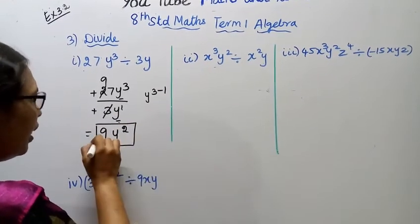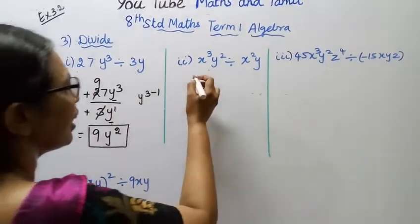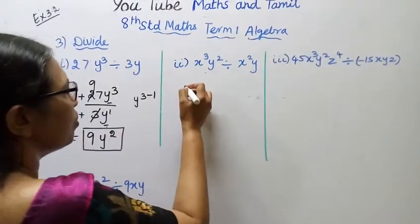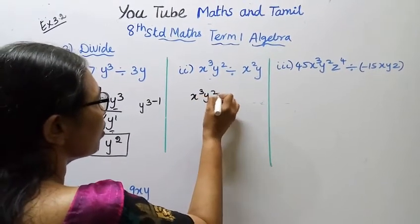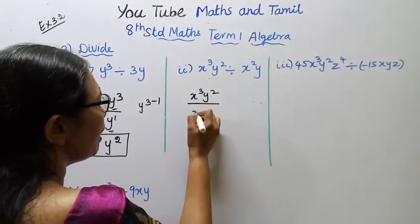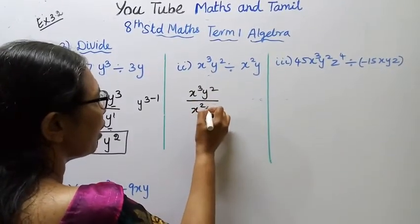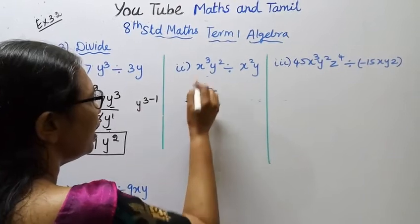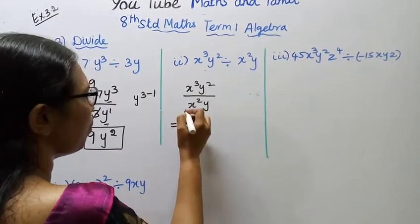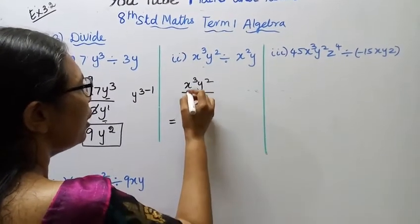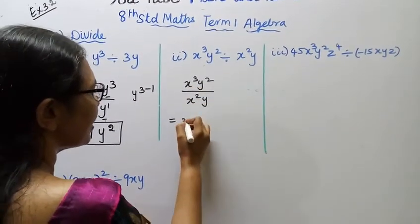Second subdivision: x cube y square divided by x square y. This is the problem. We apply the same rule: plus into plus is plus.